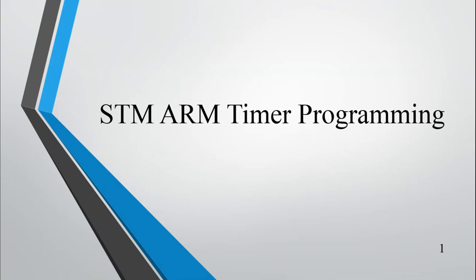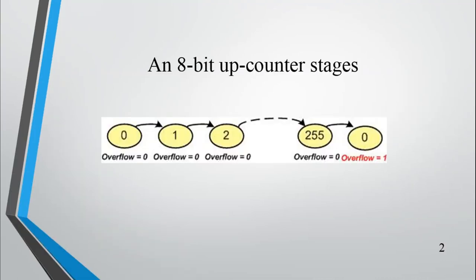Today we will see STM32 ARM Timer Programming. First, we will see what is meant by an 8-bit up-counter. A counter is nothing but a variable. Whenever it is getting a clock, it will keep on incrementing in the case of an up-counter — from 0, 1, 2, 3, up to 255. After reaching the maximum value of 255, when again a clock is given, it will roll over back to 0.